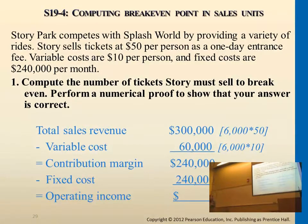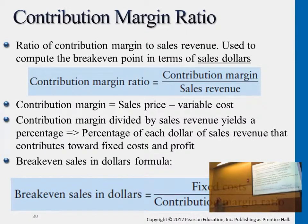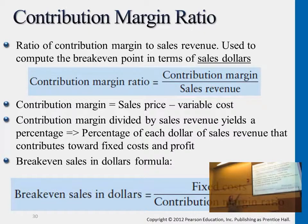So how do we get to break-even dollars? We still use contribution margin information. Remember the $120 from earlier? For every event you sell to a customer, you're able to generate a contribution margin of $120 per event. We use that 120 divided by sales revenue, 200. This gives us contribution margin ratio, as shown in the upper formula.